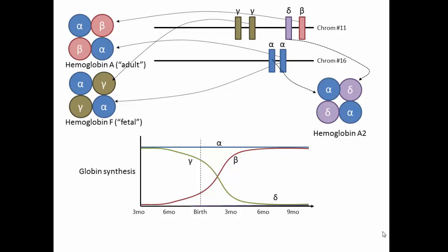Delta globin remains at low levels late in gestation and beyond. The assembled hemoglobin at these different stages is exactly what you would predict. Early in pregnancy, virtually all the hemoglobin is F.